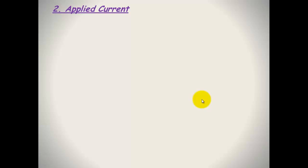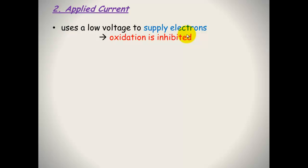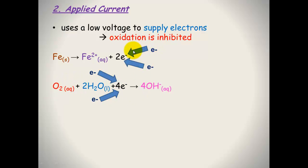The second way to protect against corrosion is by applying an electrical current. It uses a low voltage to supply electrons, about as low as your torch battery. This inhibits oxidation. This would normally be your oxidation reaction, Fe→Fe²⁺+2e⁻, and this would be your reduction reaction, O₂+2H₂O+4e⁻→4OH⁻. Reduction wants electrons. If we can supply those electrons from another source, this reaction is happy and will continue. The electrons being produced will force the oxidation reaction backwards. Why would it produce electrons if there's plenty of electrons around?